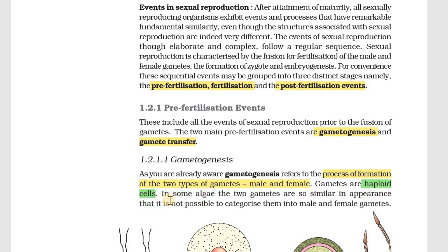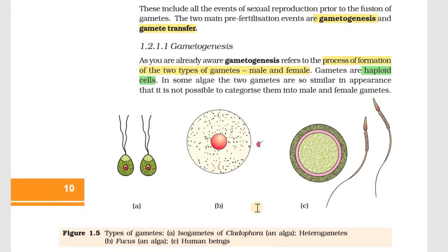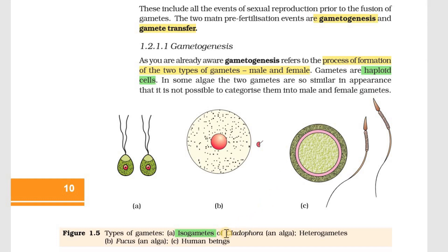In algae, there are two types of gametes: female gametes and male gametes. Sometimes we don't need to categorize them separately. When gametes look the same morphologically, they are called homogametes or isogametes. Homo means same. Isogametes of Cladophora is shown in figure 1.5 as an example.